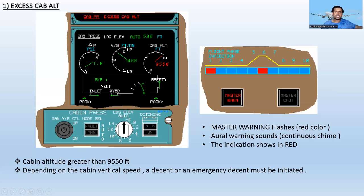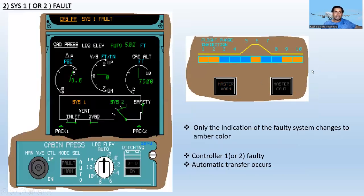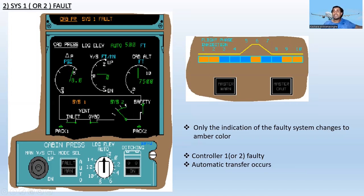Next, looking at the cabin pressure control panel: the next warning is System One or System Two Fault. Only the indication of the faulty system changes to amber color. If System One is faulty, System One comes up in amber; if System Two is faulty, System Two comes up in amber.